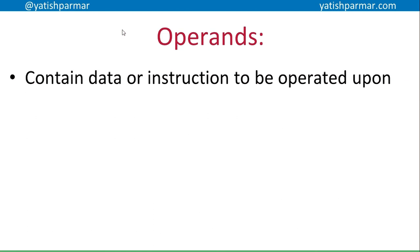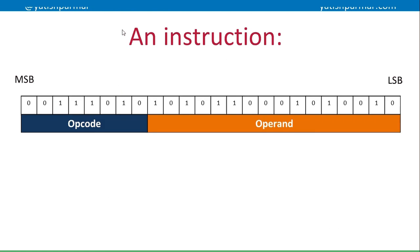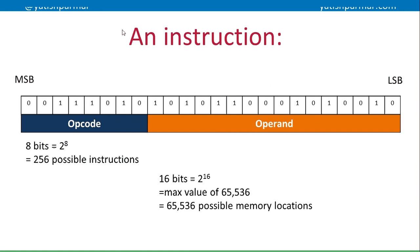You need to remember what the operand is and the opcode. The operand contains the data or the instruction that you want to operate upon. So in this example instruction, we've got the opcode on the left hand side from the most significant bit down, then the operand in the remaining bits. If the opcode has 8 bits, that's 2 to the 8, so there are 256 possible instructions. And with the operand at 16 bits, that's 2 to the 16, giving a maximum value of 65,536 — so you can basically have 64K of memory which you could address in a computer system.